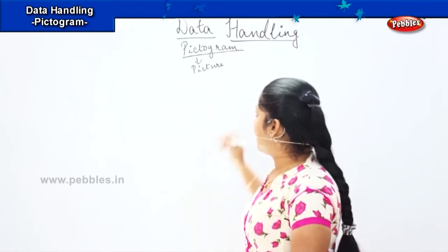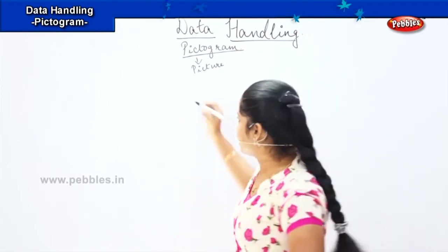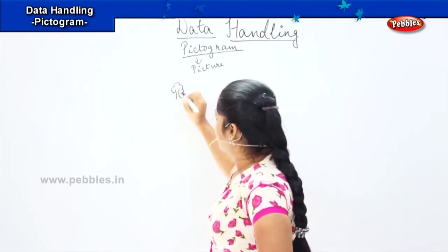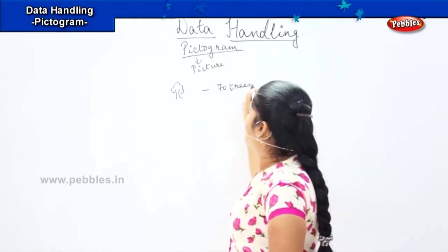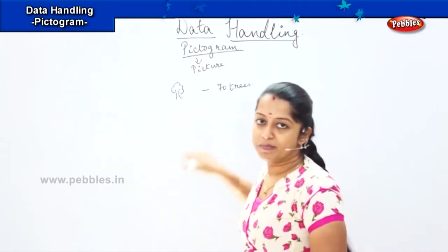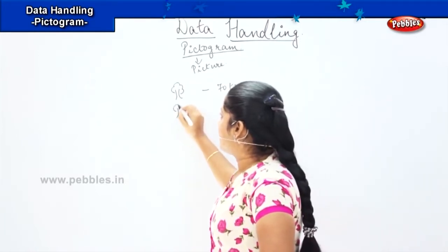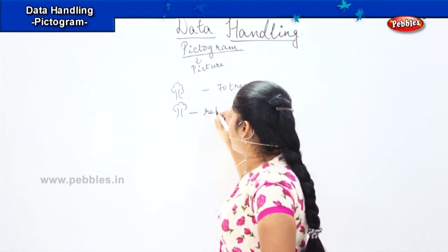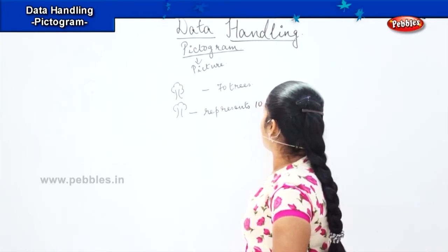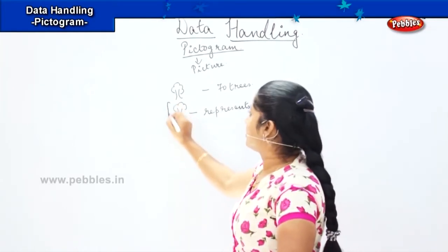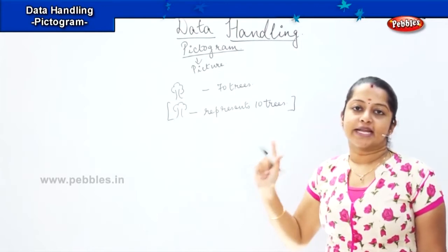For example, usually in a pictogram we denote one picture to represent some amount. Say for example, if I draw a tree and I have to represent 70 trees, it is not possible to draw 70 trees on a small page. So in a pictogram, I will show one tree as representing say 10 trees. So wherever you see this tree symbol, it means one tree stands for 10 trees.